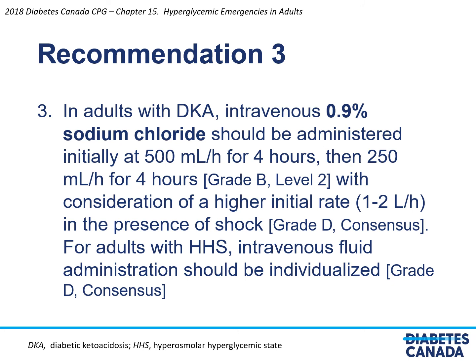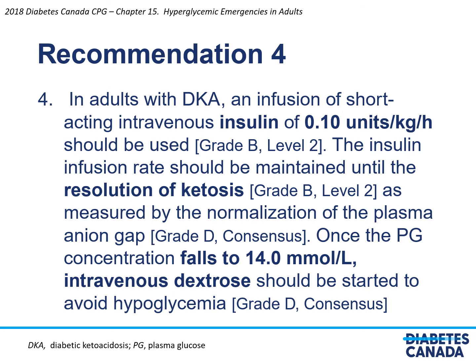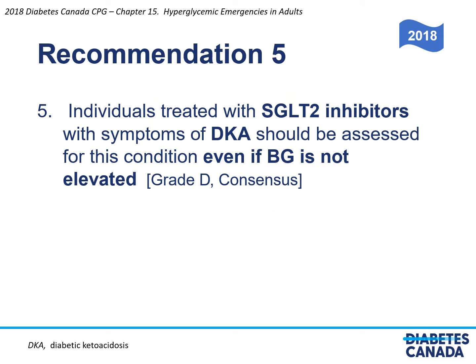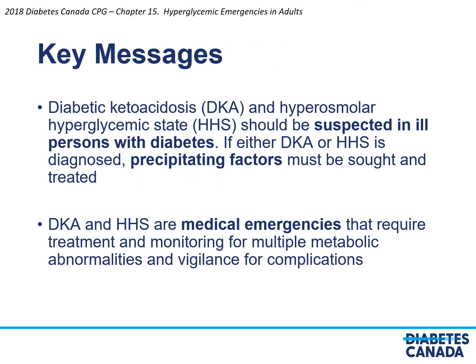Recommendation four: in adults with DKA, an infusion of short-acting intravenous insulin of 0.1 units per kilo per hour should be used. The insulin infusion rate should be maintained until resolution of ketoacidosis as measured by normalization of the plasma anion gap. Once plasma glucose falls to 14 millimoles per liter, intravenous dextrose should be started to avoid hypoglycemia. Individuals treated with SGLT2 inhibitors with symptoms of DKA should be assessed for this condition even if blood glucose is not elevated.